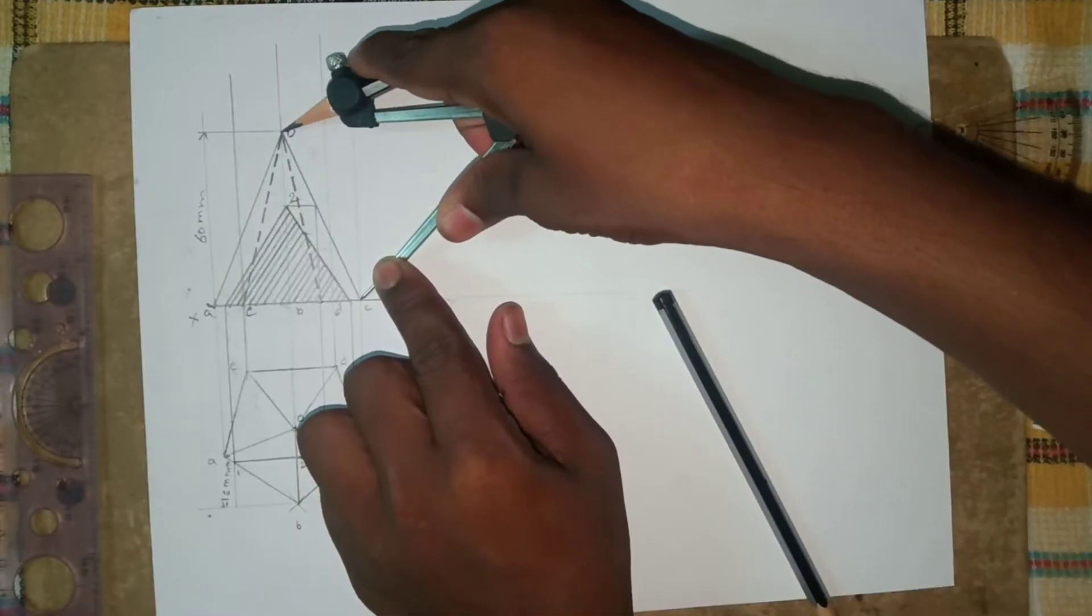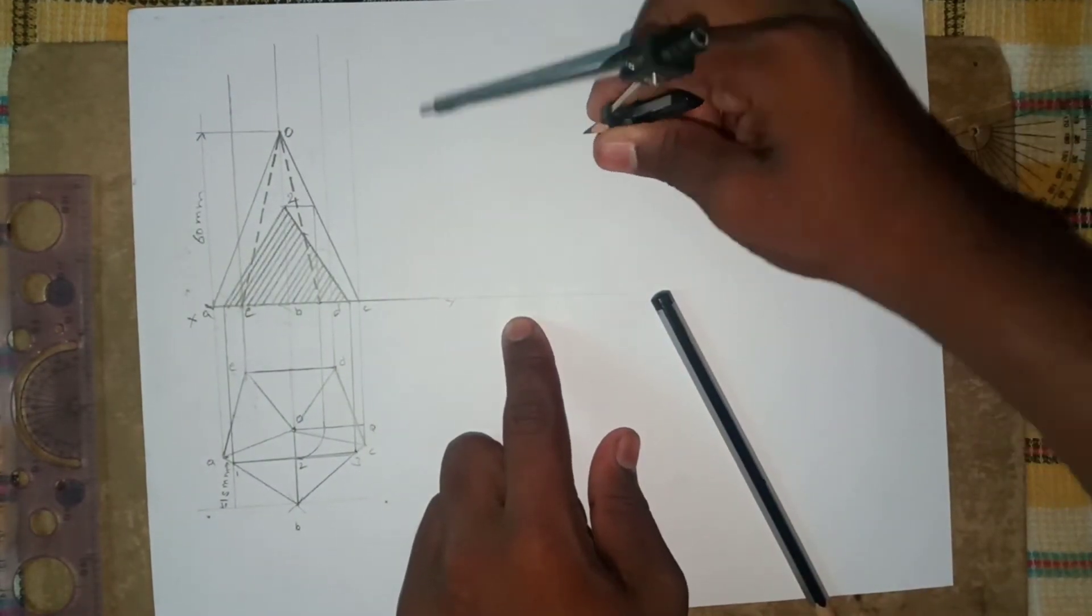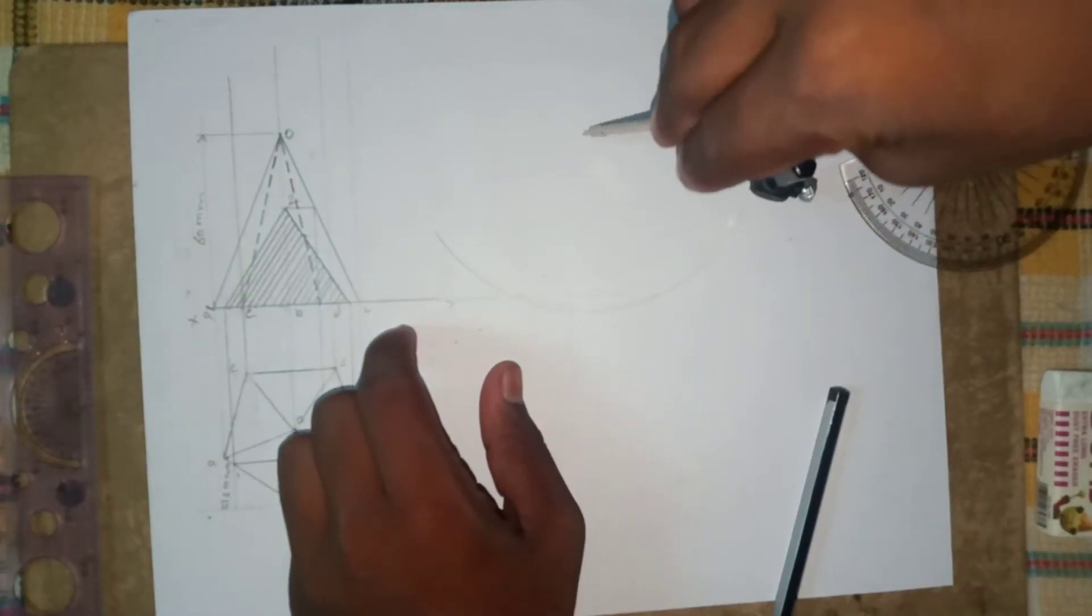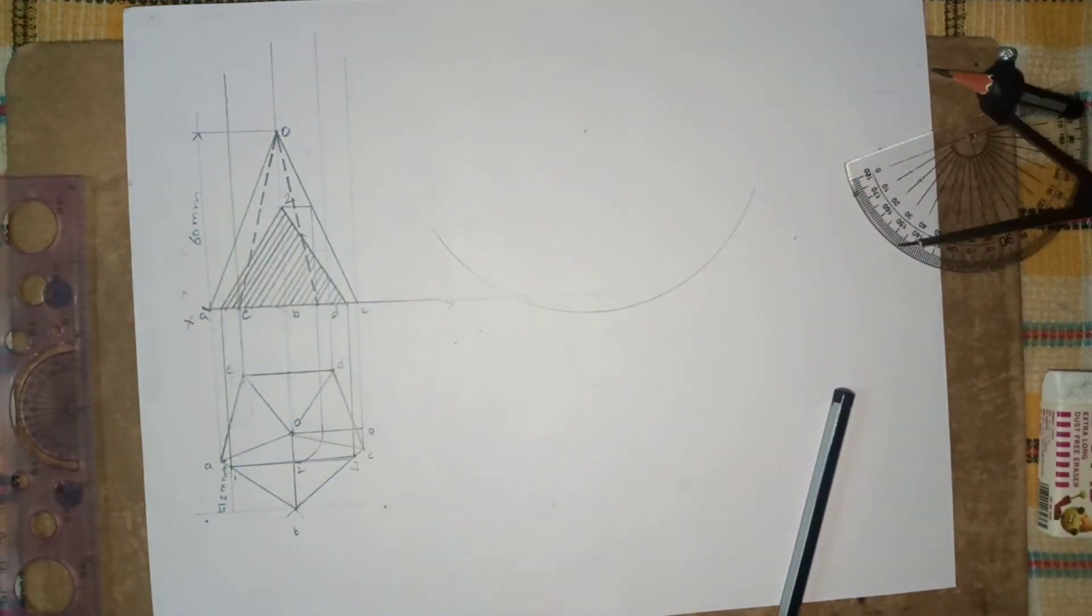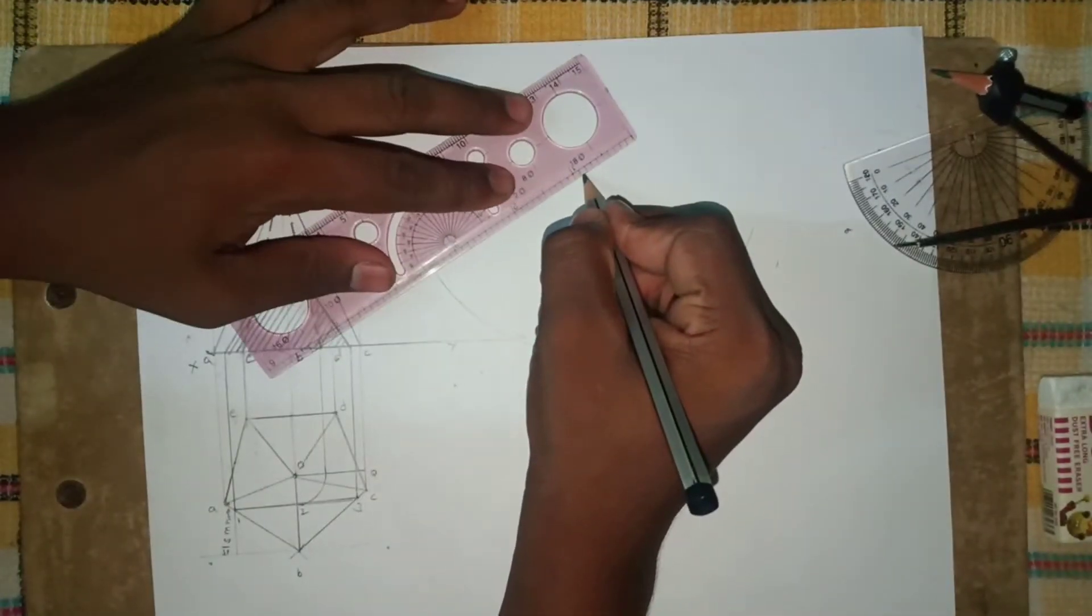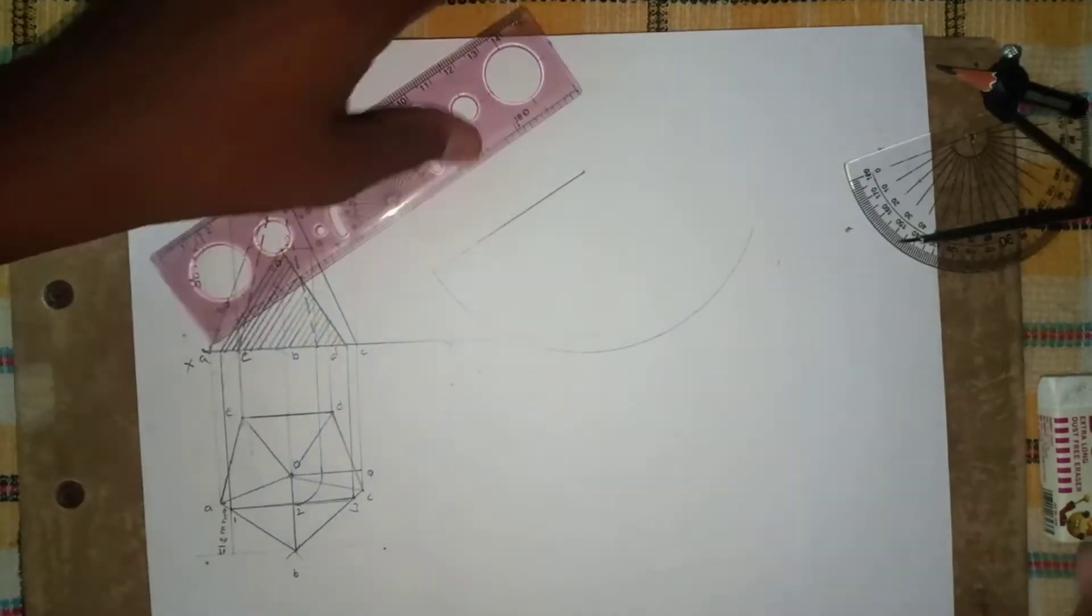This is the O point. Now take the slant height, draw a point from the center. We have to draw an arc. Now draw a slant height like this.